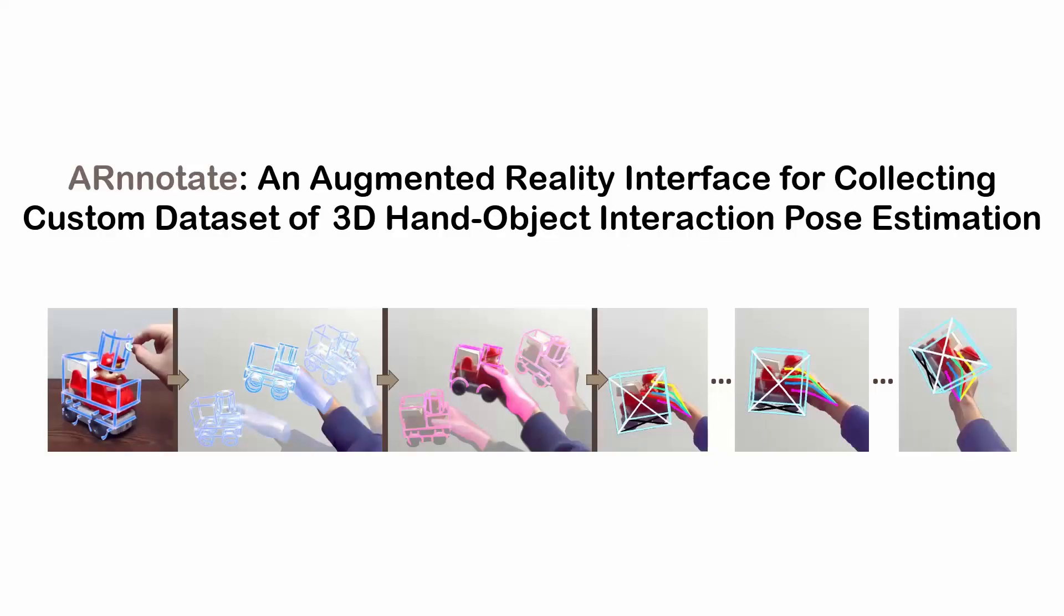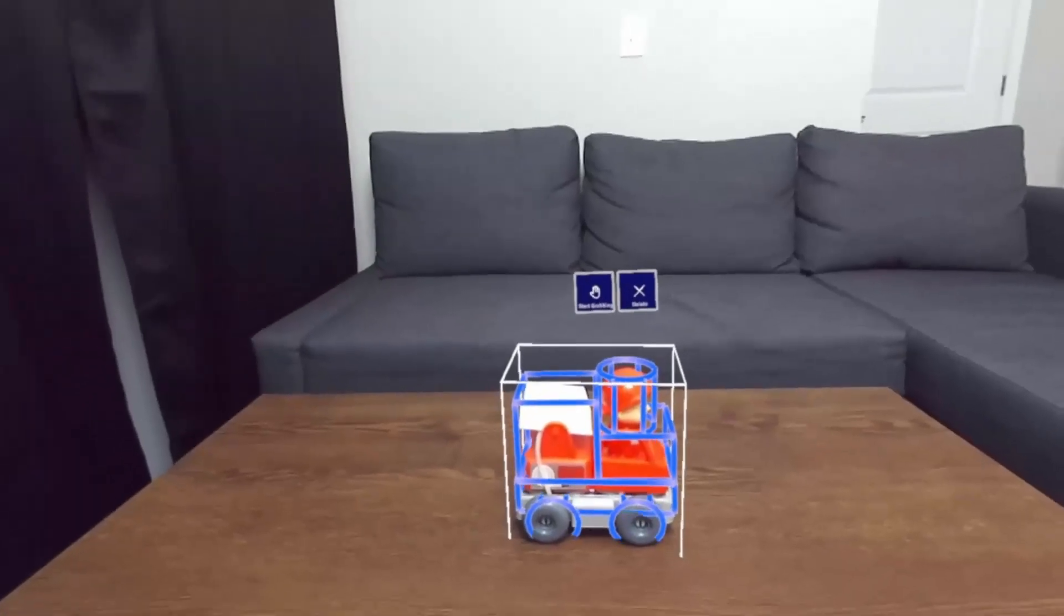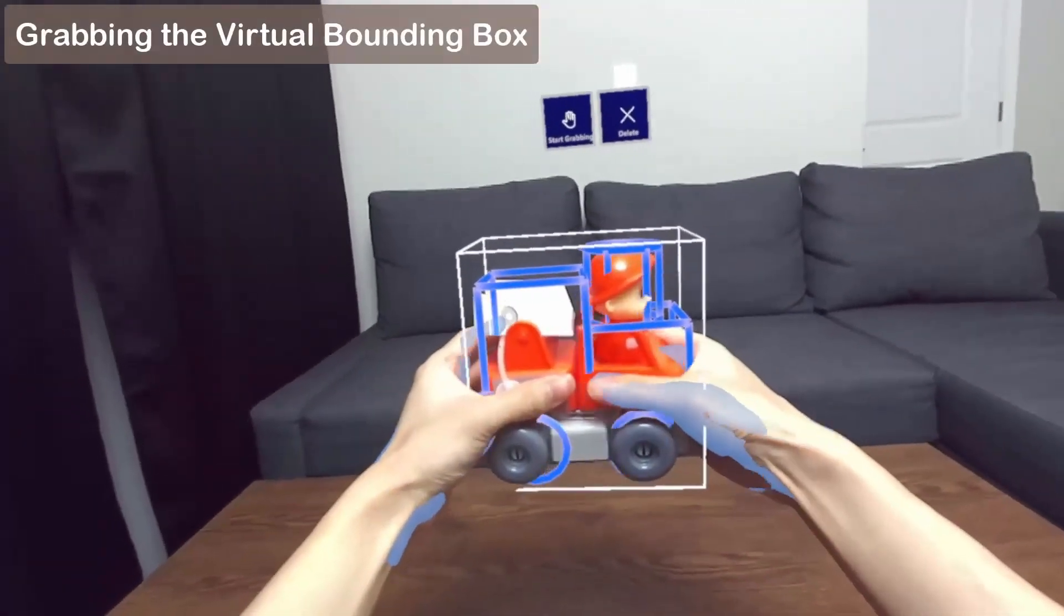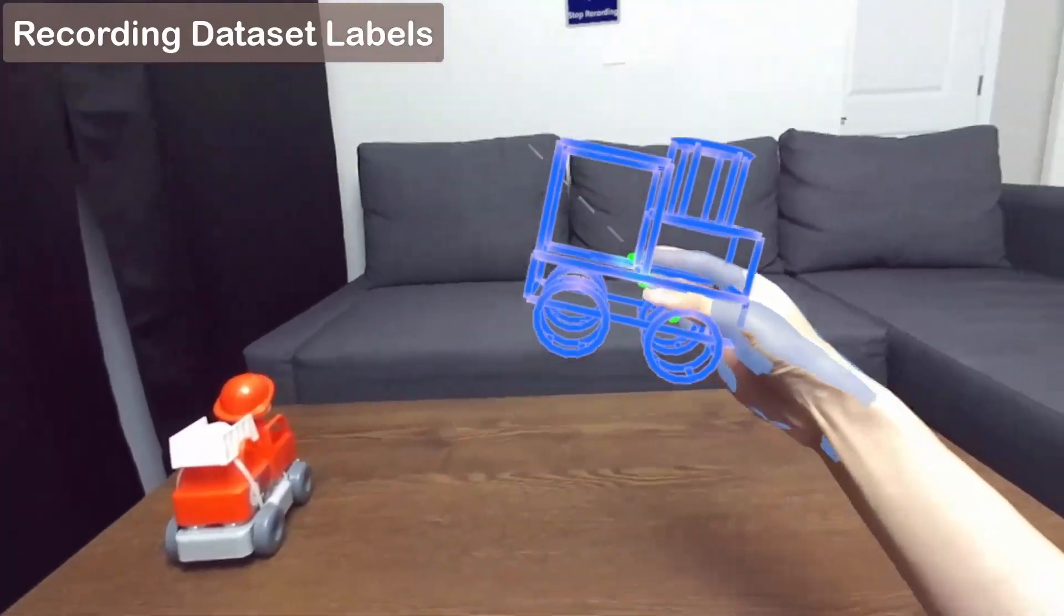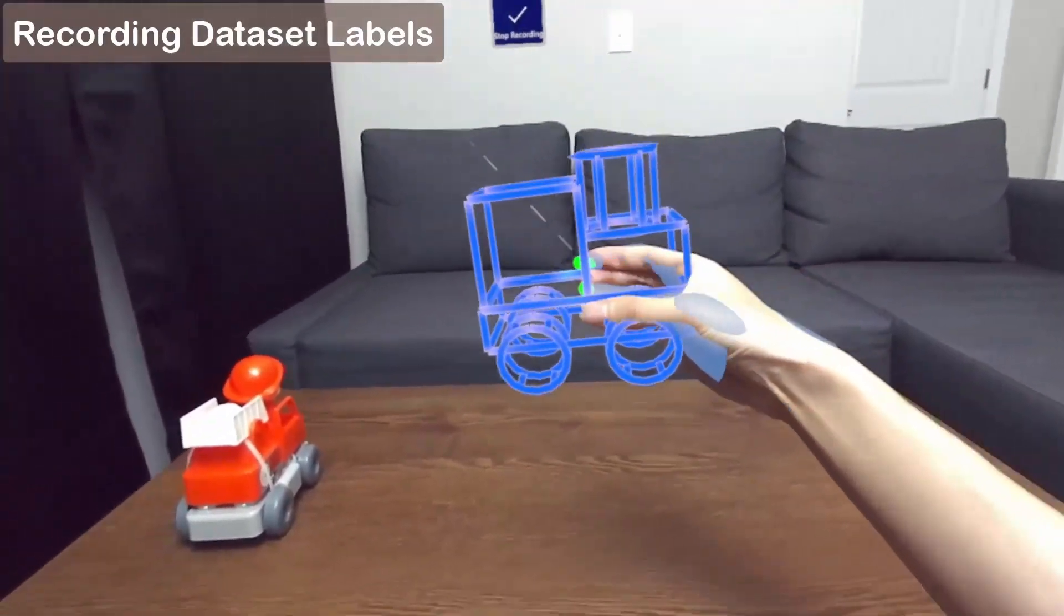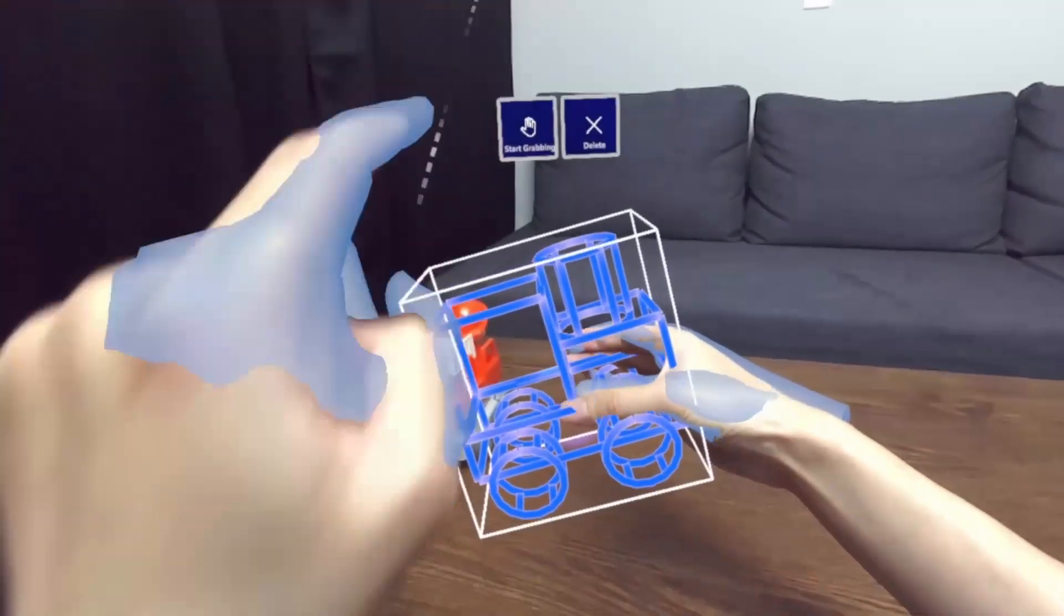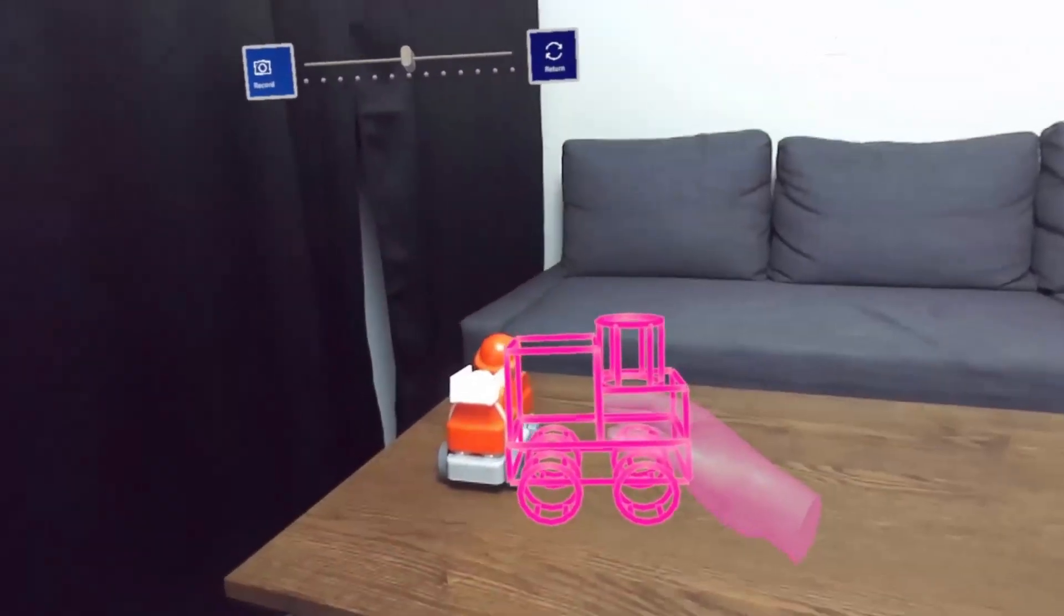We propose Arnotate, an AR-based workflow that allows end-users to collect custom datasets of 3D hand-object pose estimation. With Arnotate, a user first records the dataset labels by manipulating a virtual bounding box with bare hands while wearing an AR head-mounted device with hand-tracking capability.